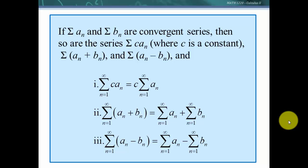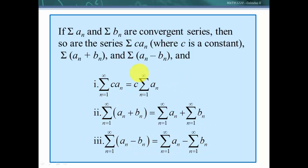If we look at properties of convergent series: if a series converges, then a constant multiple is also convergent, because it converges to a value and multiplying by a finite constant stays finite. The sum or difference of two convergent series is also convergent, since we're combining two finite values. These properties follow from properties of summation — we can factor the constant inside or outside, and sum or subtract now or later.